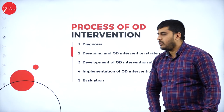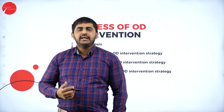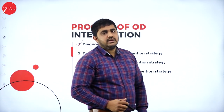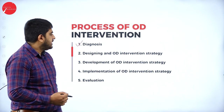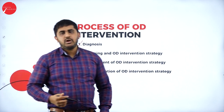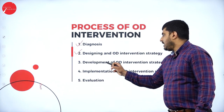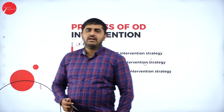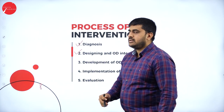The process of OD intervening has five different steps. First is diagnosis — the problem area is identified and the root cause of the problem is diagnosed. In the second step, designing an intervention strategy: once you know the problem, you design a particular strategy for how to intervene in the organization. Third is development of an OD intervention strategy — you design and finally develop one strategy to intervene inside the organization for the betterment of the organization.